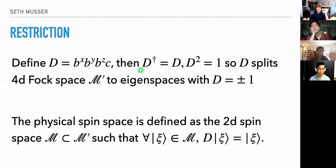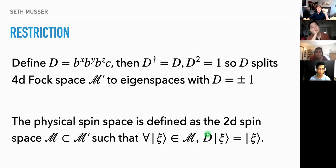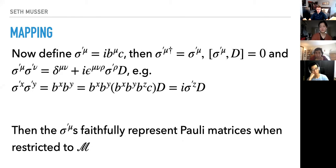We note that D is Hermitian and squares to one, so it splits the four-dimensional Fock space — which we'll call M' — into eigenspaces with plus or minus one. In order to be physical, we're going to restrict to the eigenspace where D equals one.